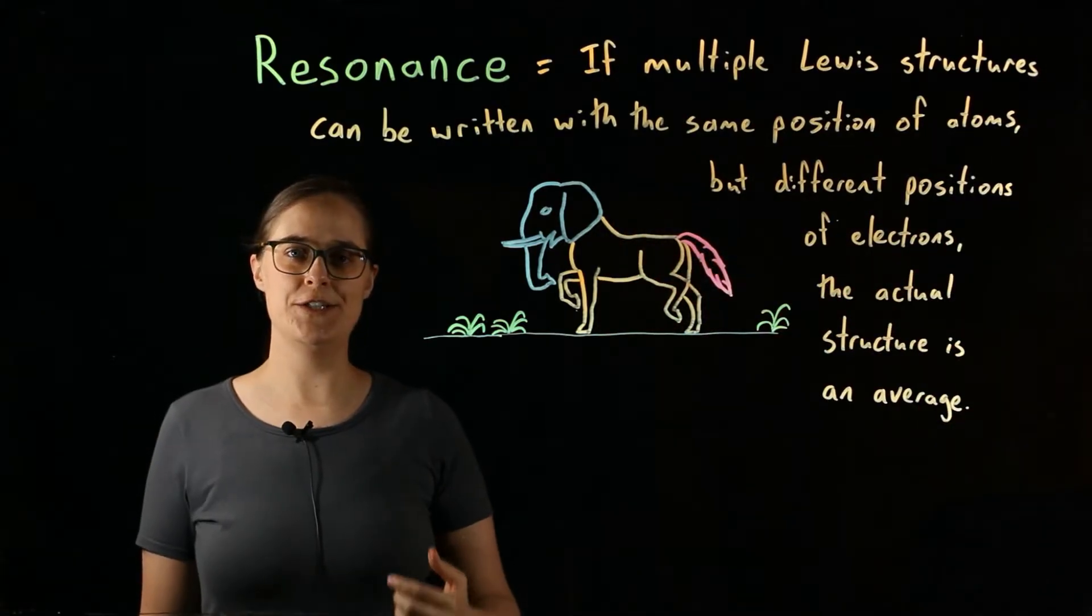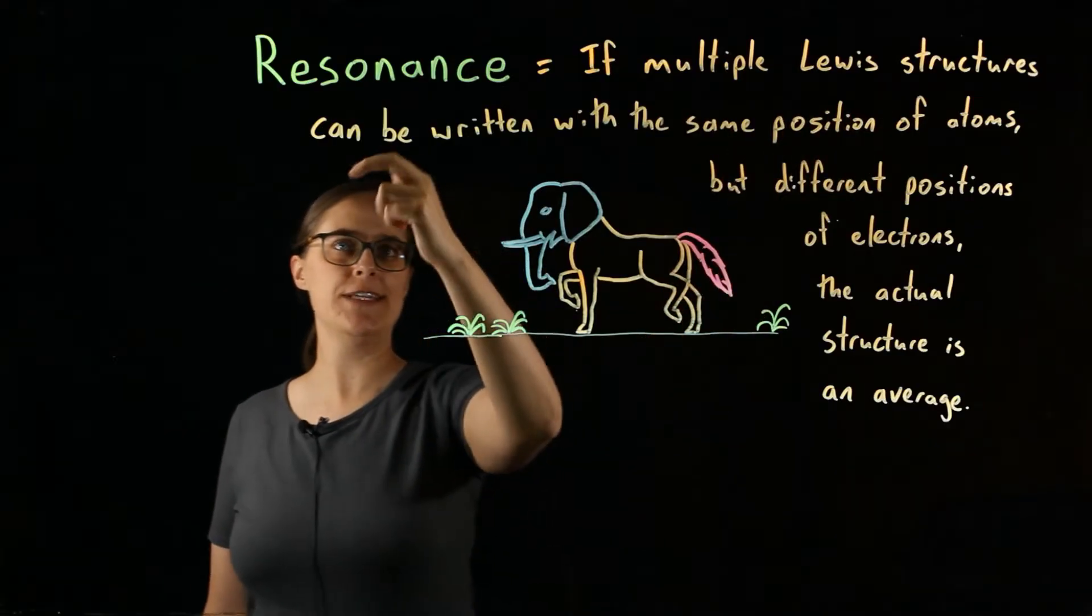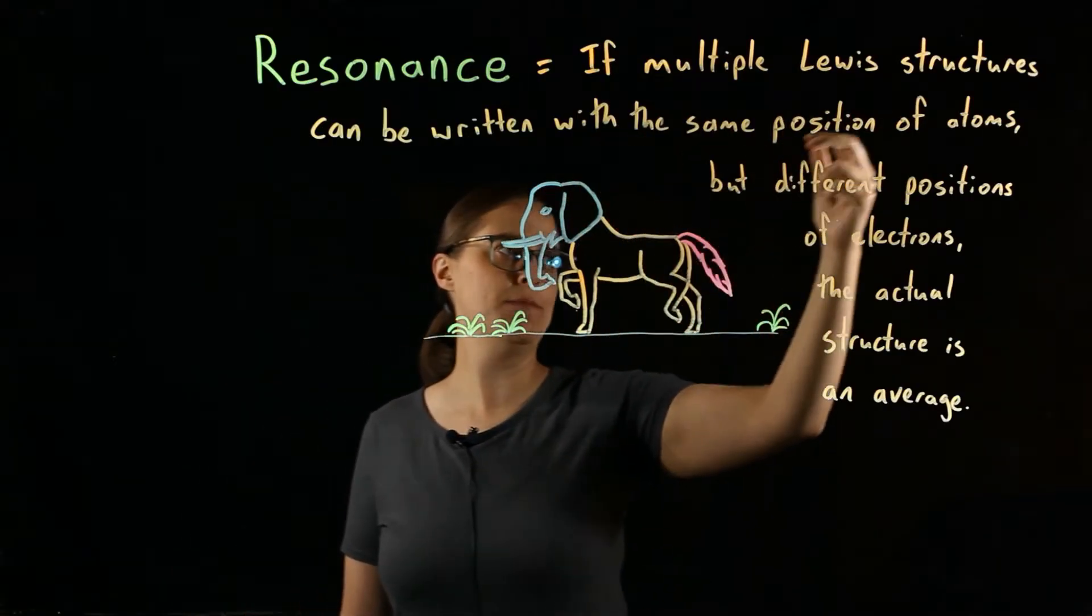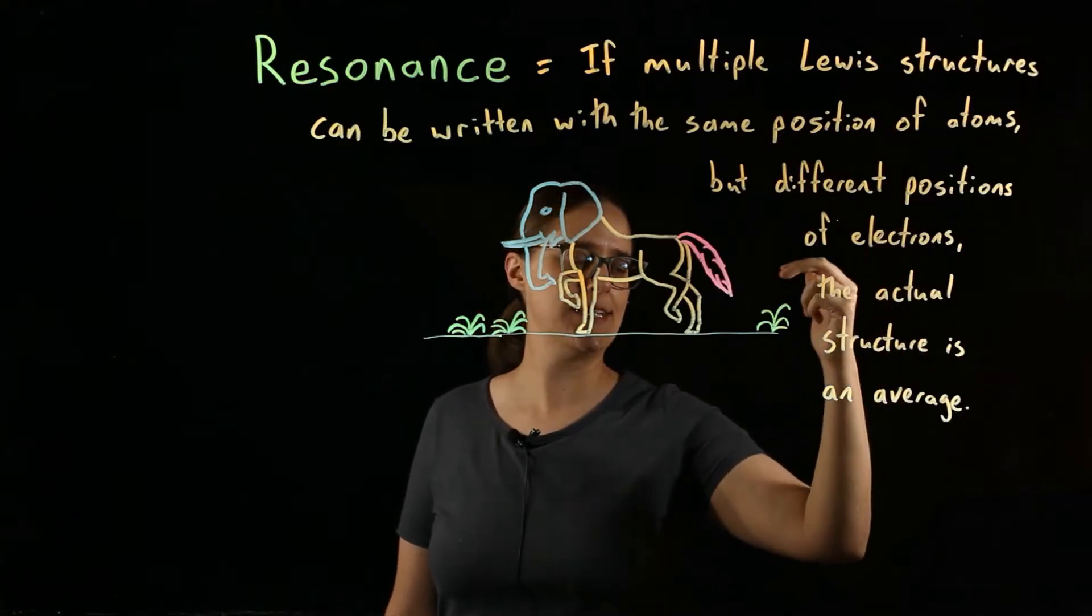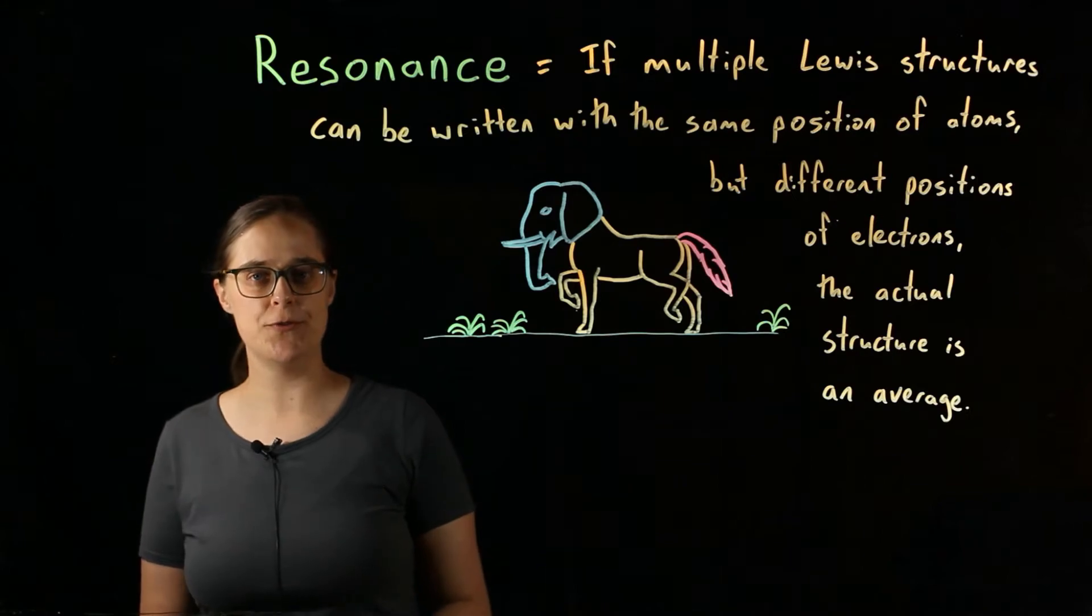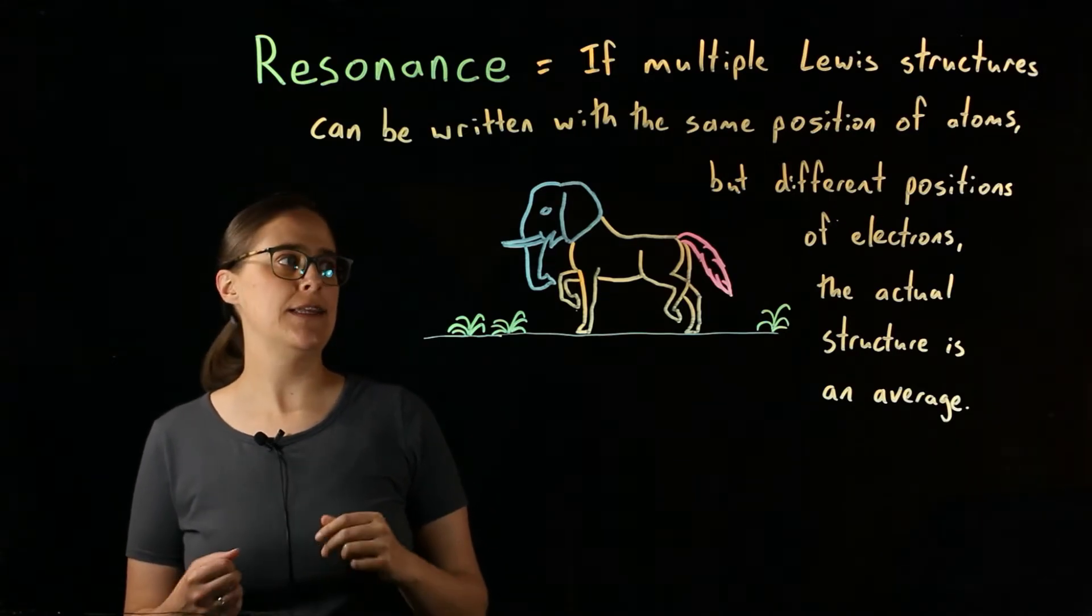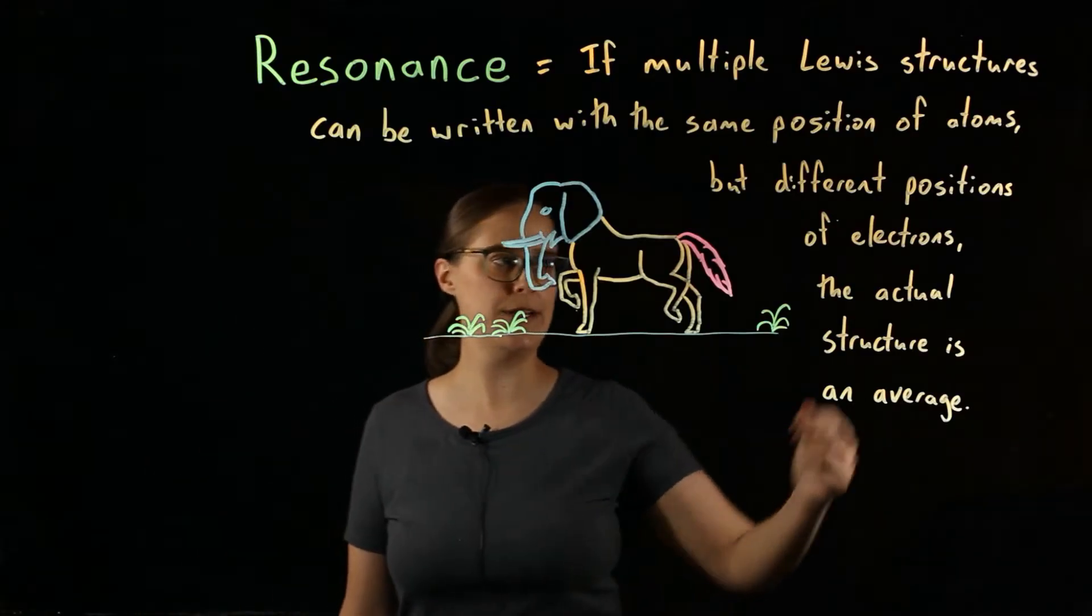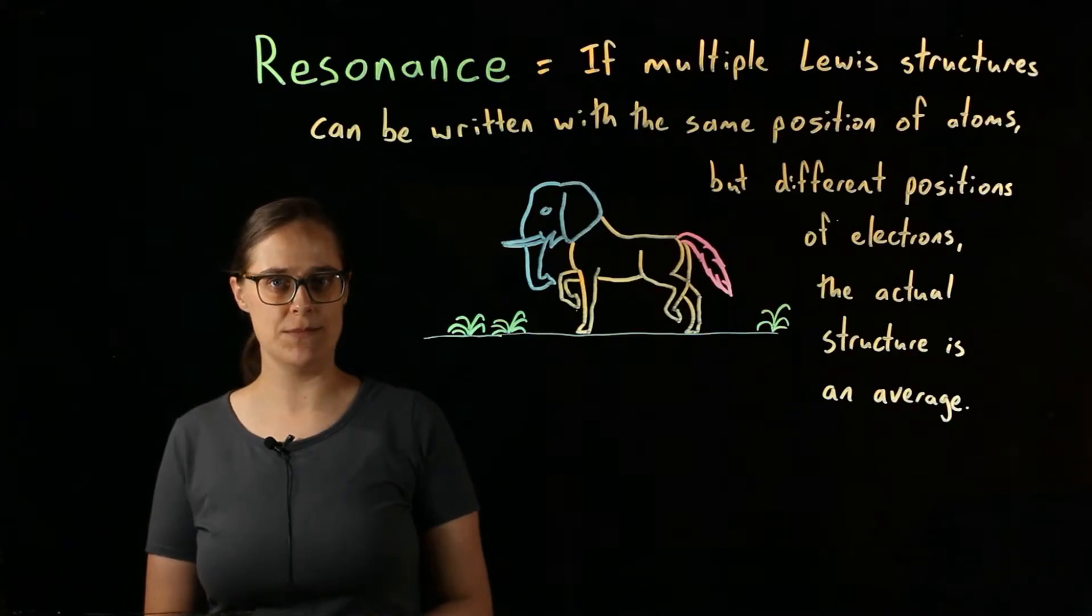The definition of resonance is, if multiple Lewis structures can be written with the same position of atoms but different positions of electrons, the actual structure is an average. This is true of either molecules or polyatomic ions. The key here is that the only difference is the position of electrons. You are not moving atoms.